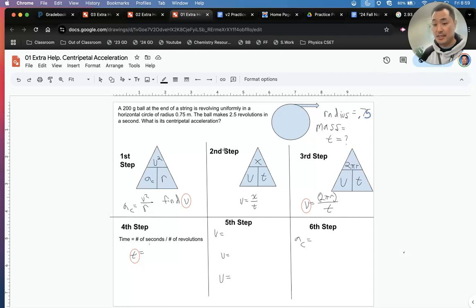So we've got a radius of 0.75. We've got a mass that's not 2.5, Elijah. Try again. What's the other value in there? It's at the beginning, 200, 200 Gs.